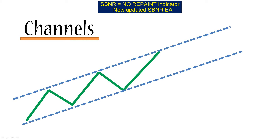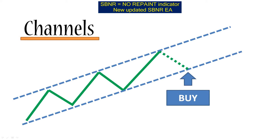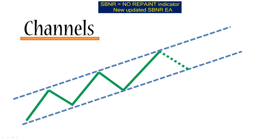Going forward, we are expecting the price to bounce off the top border and then go back down. This is where we would enter a buy order — once the price has bounced off the top, we wait for it to hit the bottom border of the channel, enter a buy order, and once it hits the top border again, that's when we close our trade. In an upward channel, it is recommended to trade only buy orders.